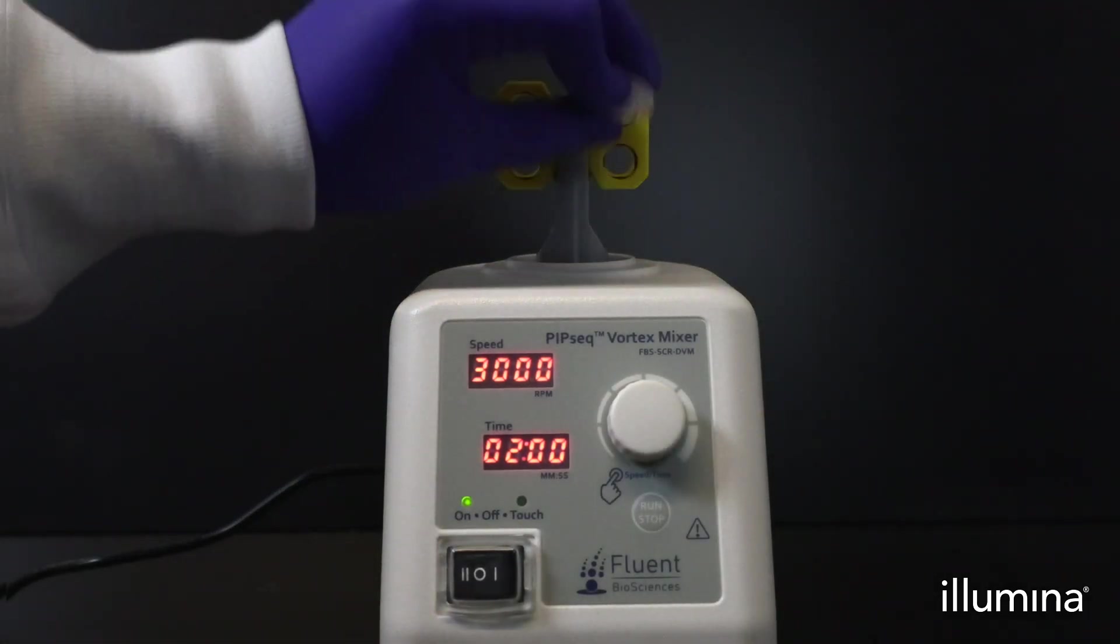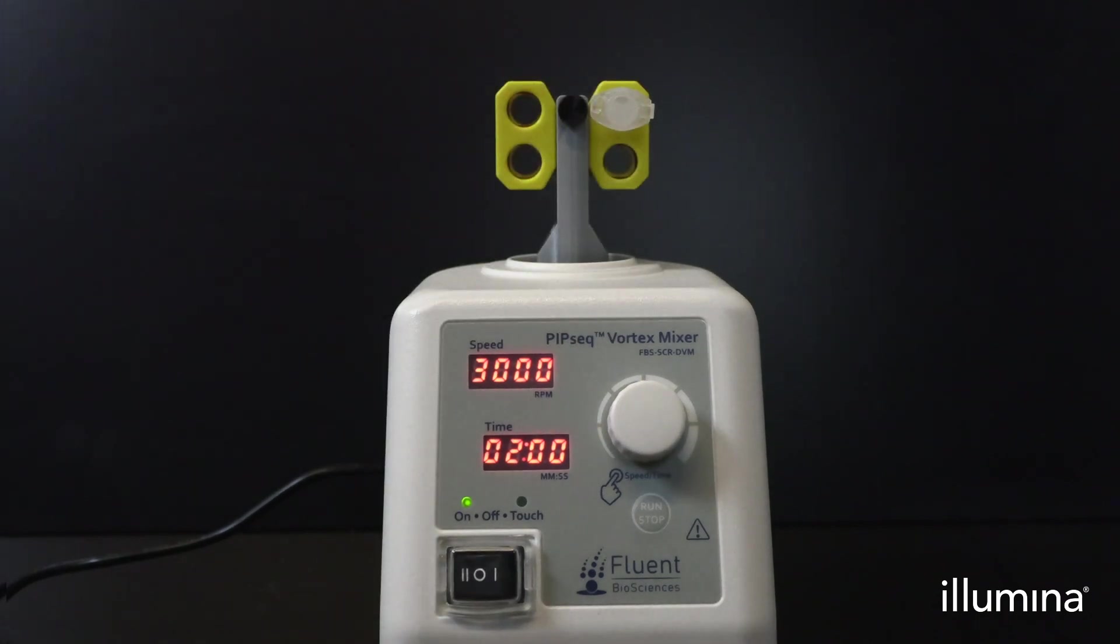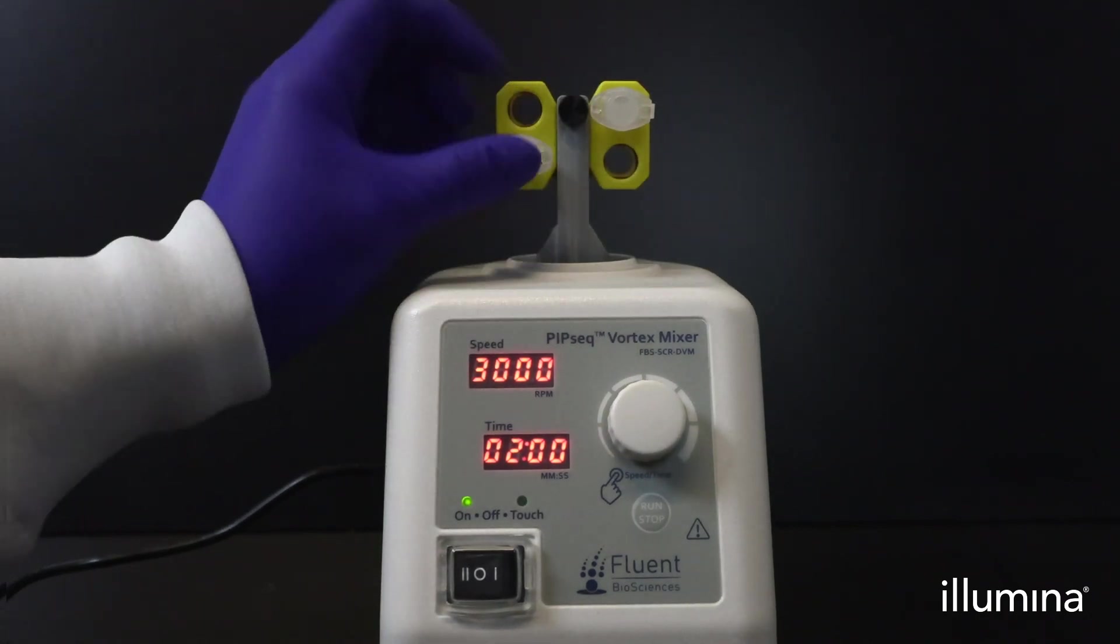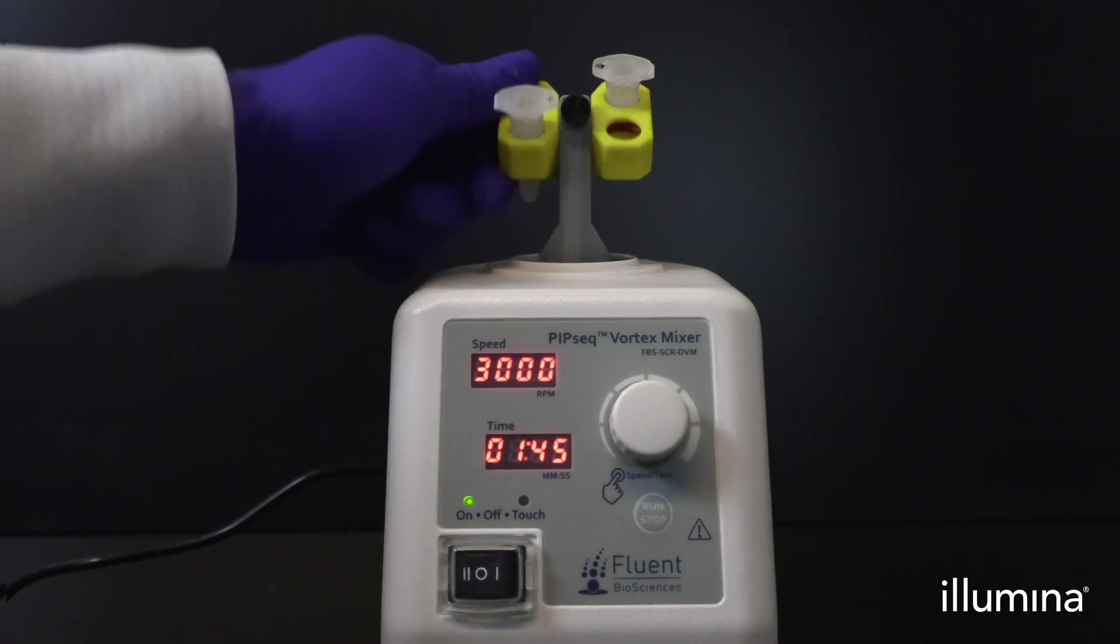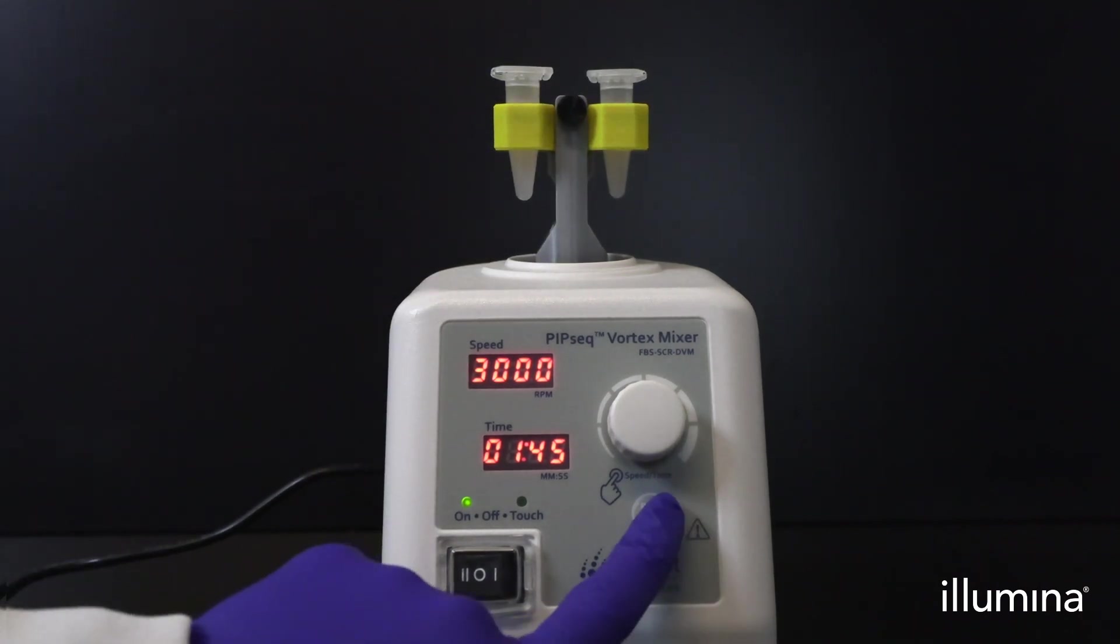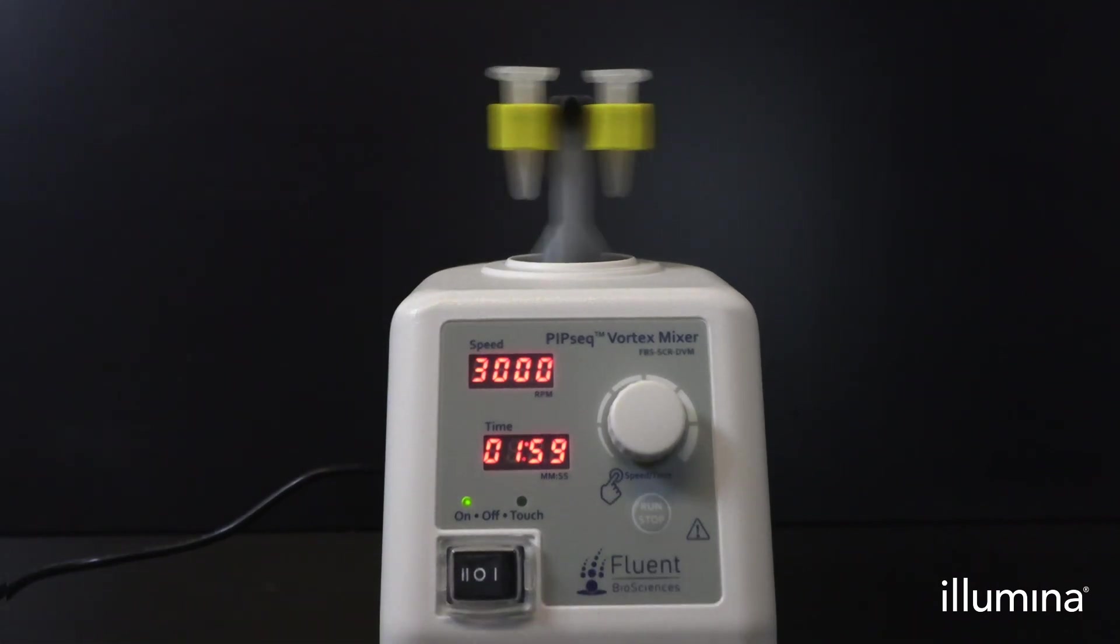For an easier transition between vortexing steps, we recommend starting the timer at 2 minutes and stopping the vortexer with 1 minute and 45 seconds remaining, or after 15 seconds of vortexing horizontally. Rotate the vortex head into the vertical configuration and hit the start button to vortex vertically for 2 minutes.